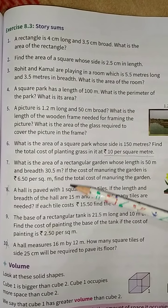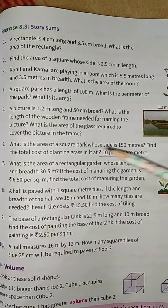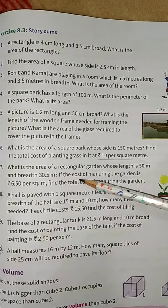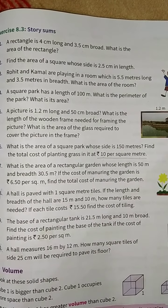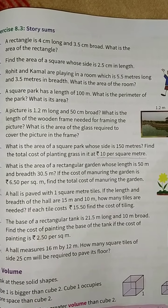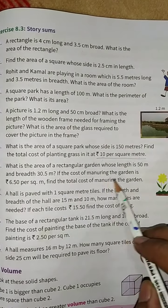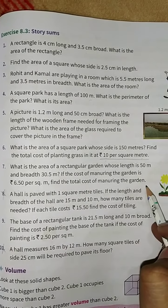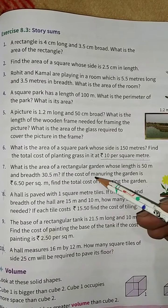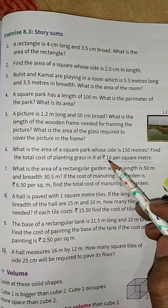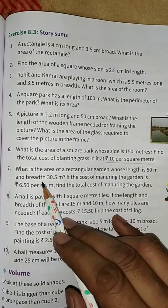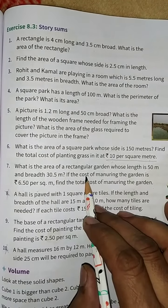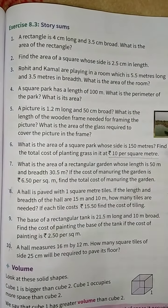Question number 7: what is the area of a rectangular garden whose length is 50 meter and breadth is 30.5 meter? You have to find the area using length into breadth. If the cost of manuring the garden is 6.5 rupees per square meter, find the total cost of manuring the garden. Same as the previous question — find the area of the rectangular garden using the formula L into B, then multiply the cost 6.5 into the area.